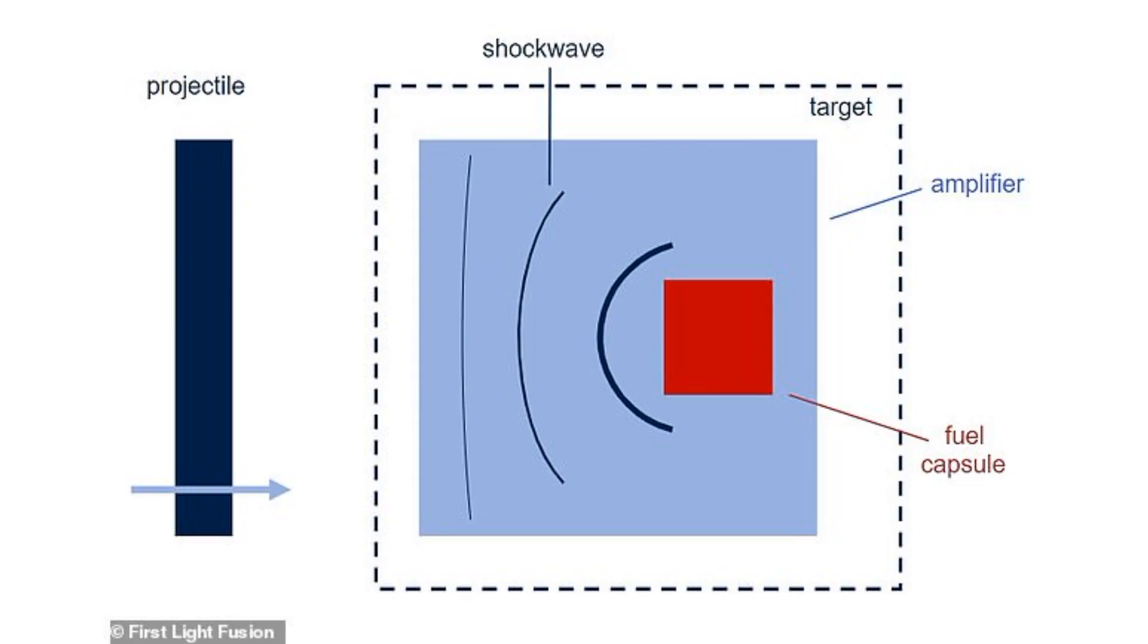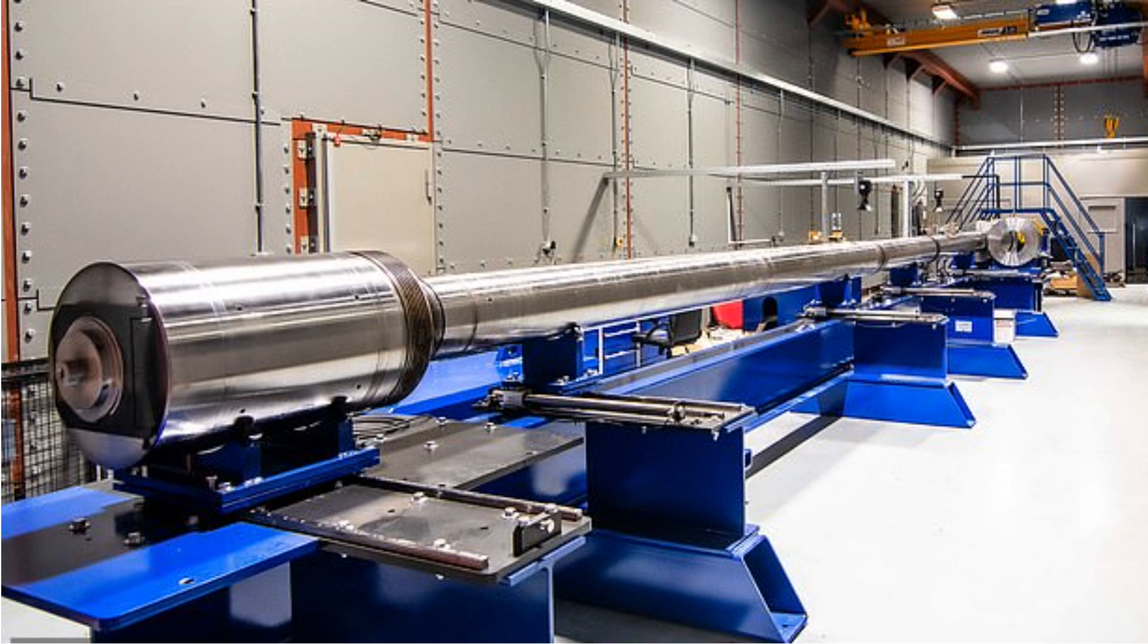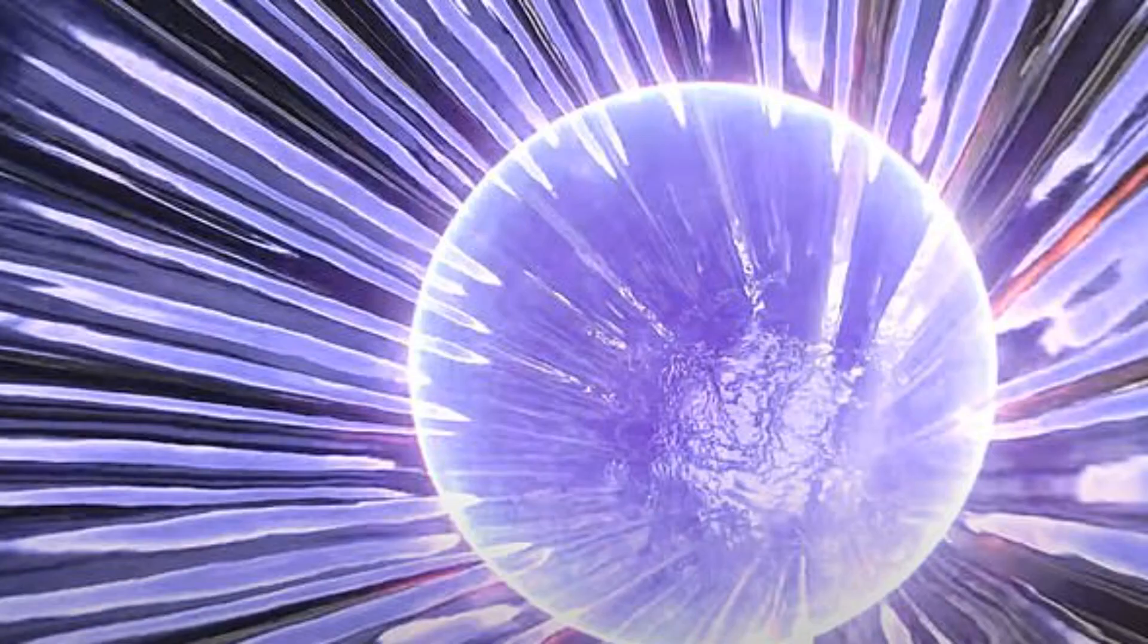Instead of the shrimp's claw, the new fusion technique uses a more robust and faster hammer, a high-velocity projectile. A large two-stage hypervelocity gas gun is used to launch a 100 gram projectile at a pellet containing the fusion fuel in the form of tritium and deuterium. The projectile reaches dizzying speeds of 14,540 miles per hour before hitting the target.